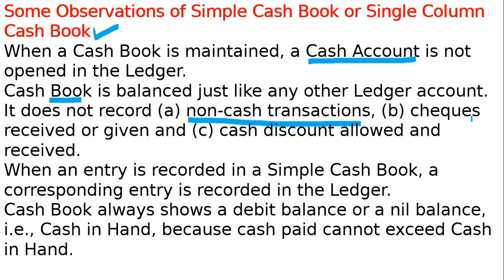Checks received and given are non-cash transactions. Check receipts and check payments, as well as cash discount allowed and received — these are not recorded in a simple cash book. A corresponding entry for each cash book entry is recorded in the ledger. For example, for cash sales: cash account is debited to sales, so on the debit side we write 'to sales account', and in the sales account ledger we write 'by cash account'.